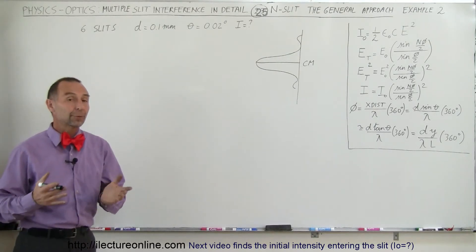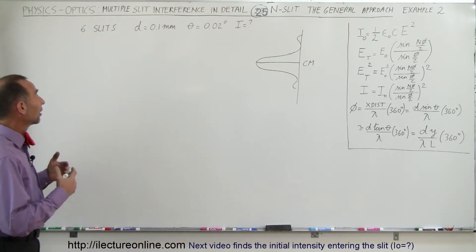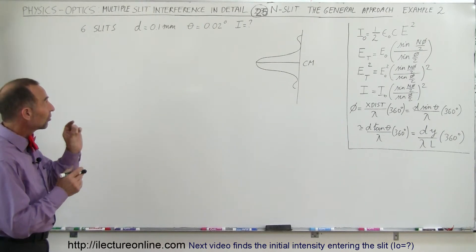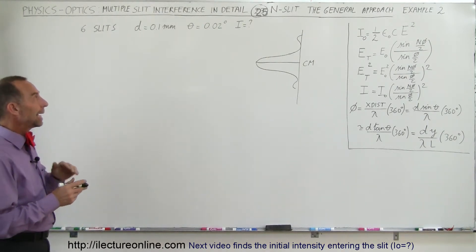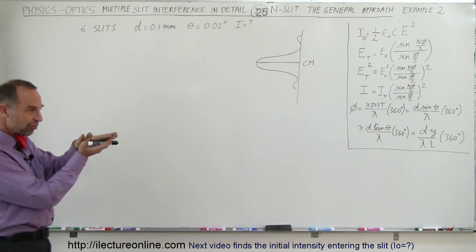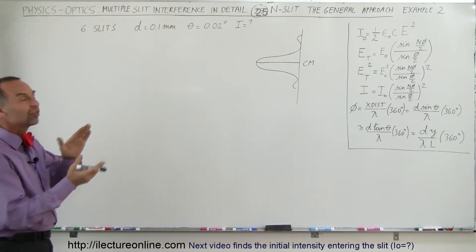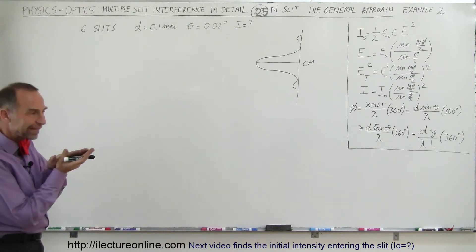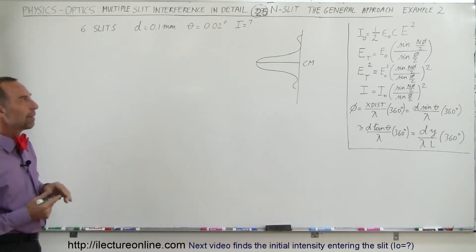Welcome to our lecture online. Here we're going to do an example where we have a six-slit interference pattern. The distance between the slits is 0.1 millimeter and the angle away from the central maximum position is 0.02 degrees. So what will be the intensity at that location on the screen or at that angle relative to the central maximum?